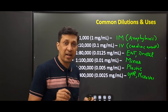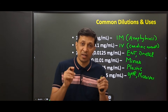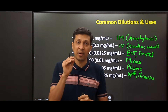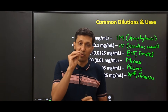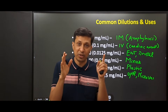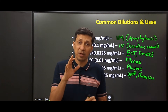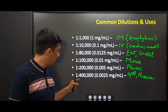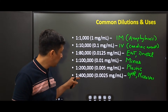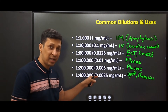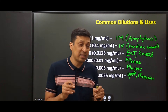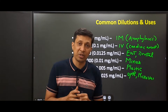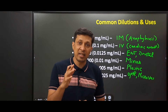Microvascular surgeries are surgeries where small nerves and small vessels are joined. Here we want minimal bleeding so that the field is clear, but there should not be excessive vasoconstriction. So adrenaline is used in very high dilution. These are the various uses of different dilutions of adrenaline.